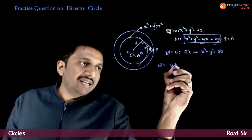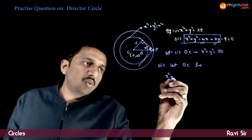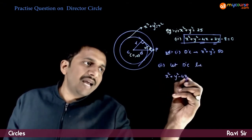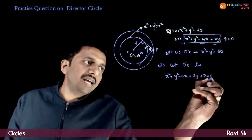So, let the director circle be x square plus y square minus 4x plus 2y plus lambda is equal to 0.